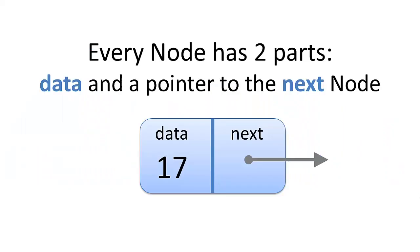Every linked list is composed of nodes. A node has two parts: data and a pointer to the next node. In our example, we're going to use an integer for data, but you could use any piece of data — any kind of object, like a student object or a car object — and then a pointer to the next node.